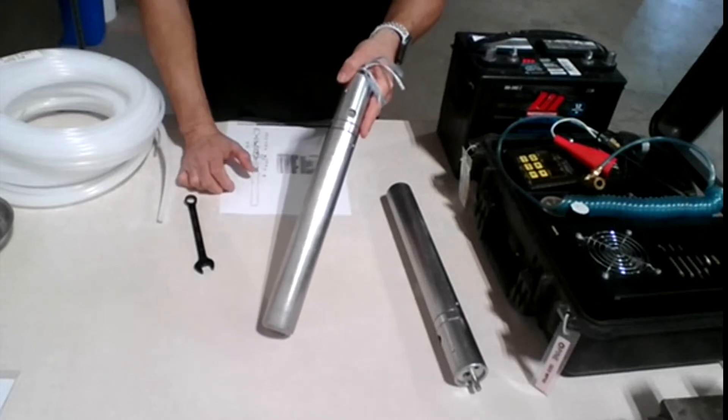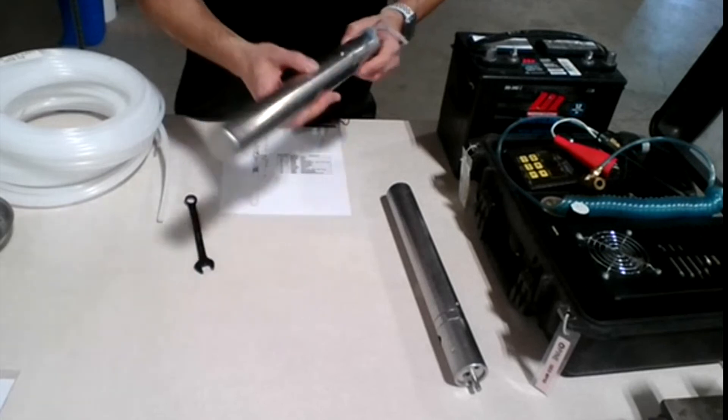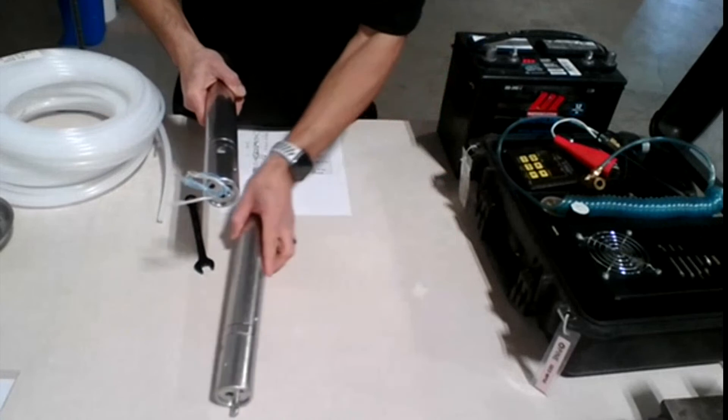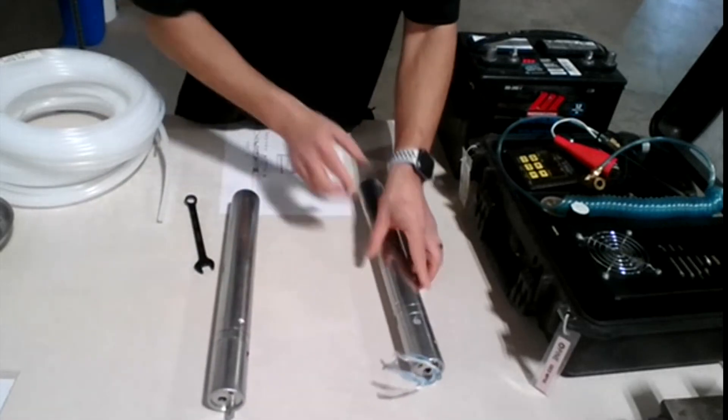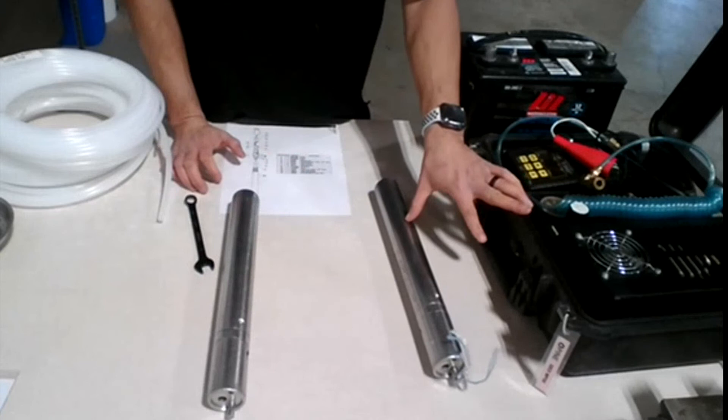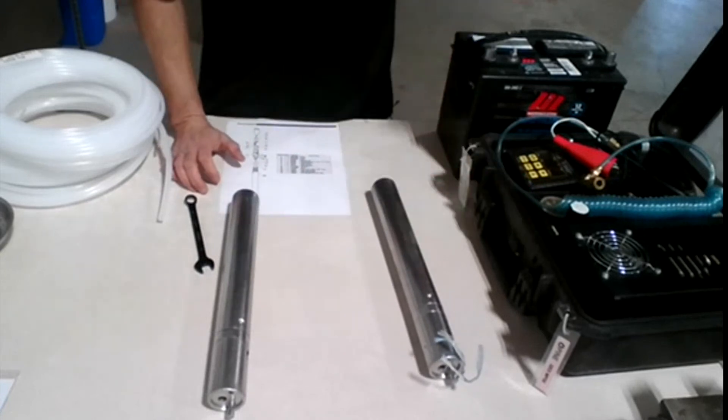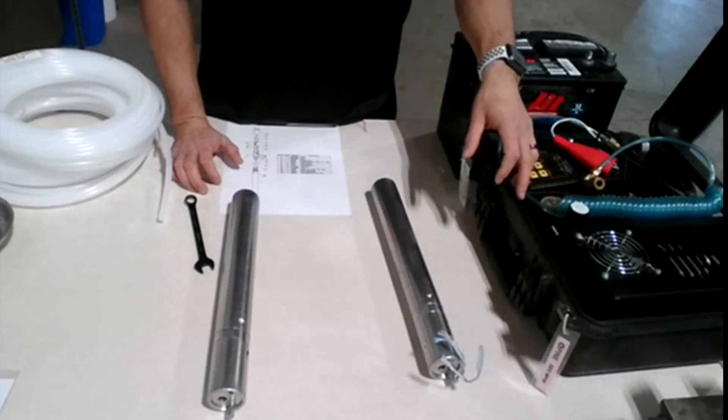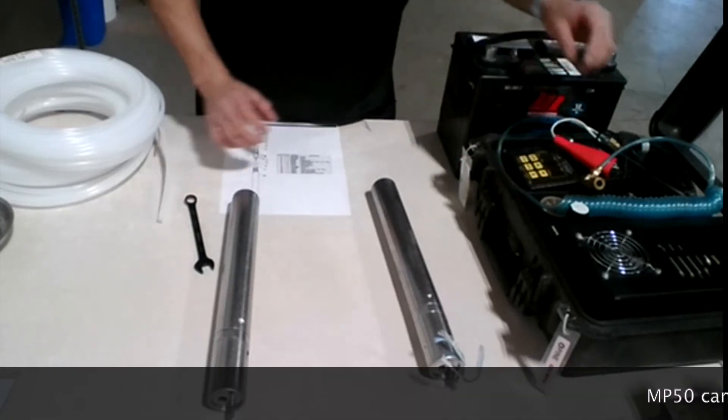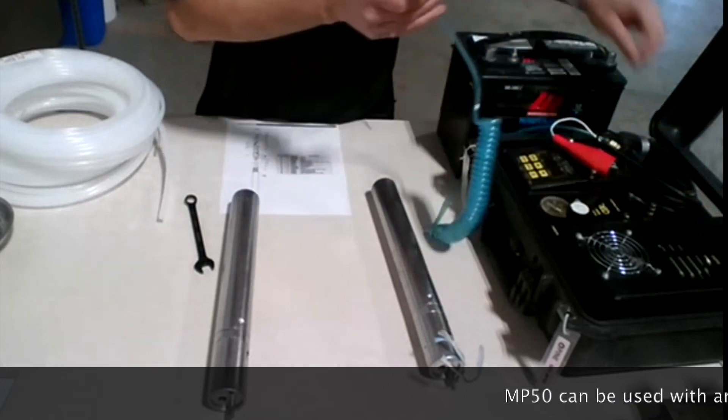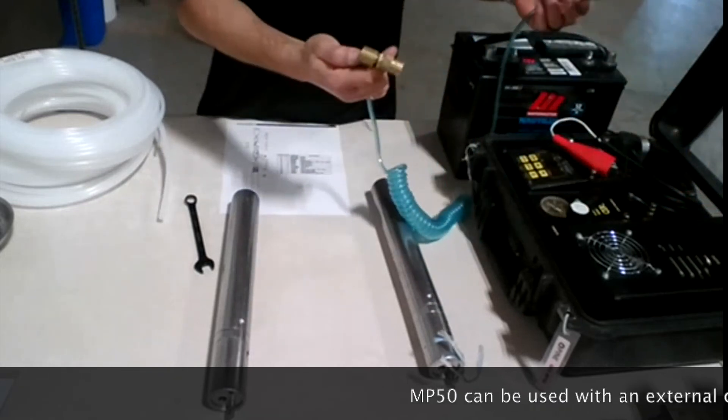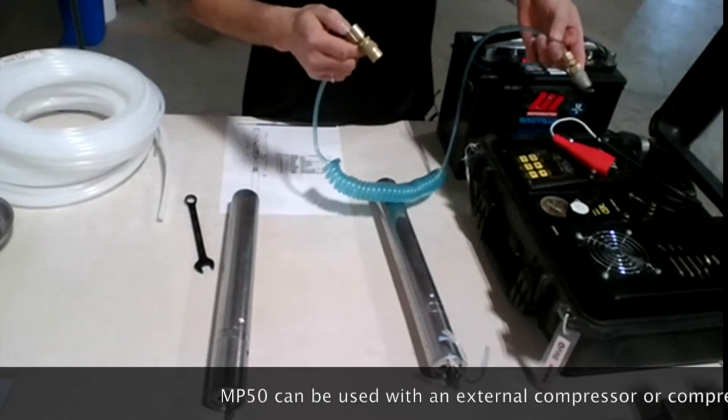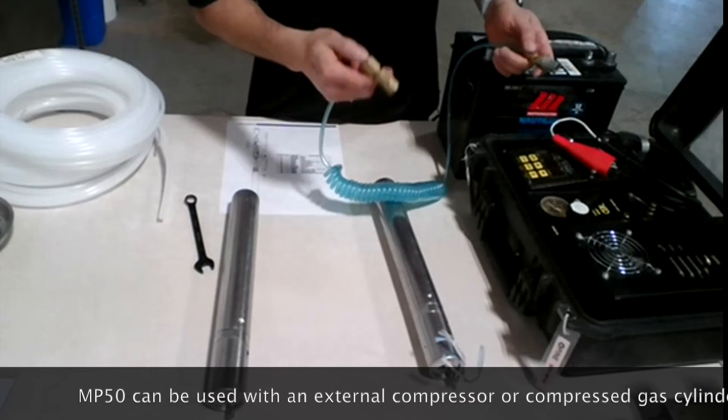Okay, so now the pump is ready. I'm going to show you how to hook it up. Like I mentioned before, the system components is the bladder pump, the compressor slash controller, and the deep cycle battery. In this case, we're using the MP50. So, the MP50 actually has the airline hose here. This is the airline that goes from the controller, from the compressor, to the pump.